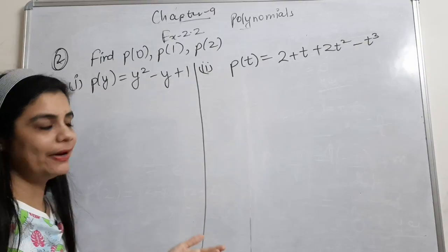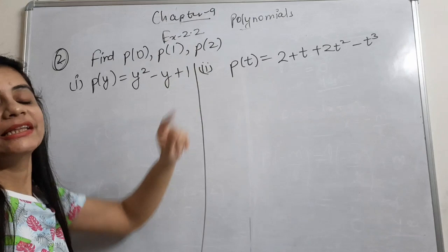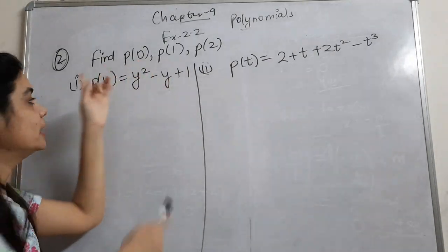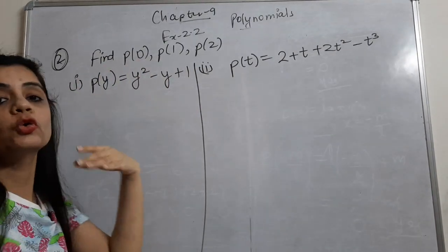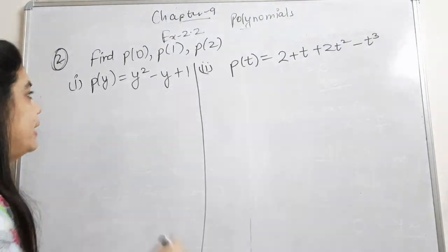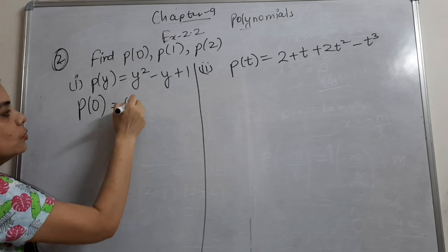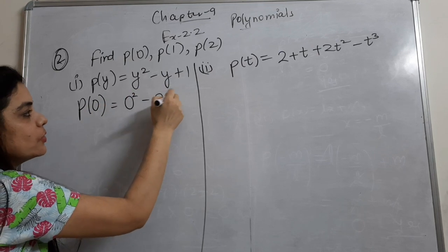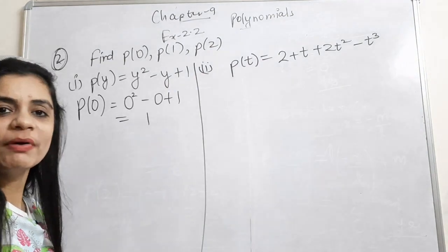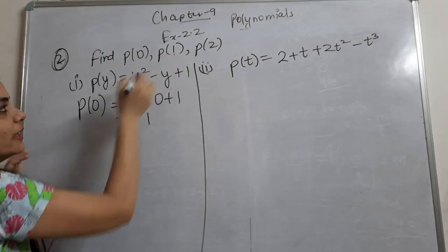First part: find p(0), p(1), p(2). That means p(0) means wherever y is, I have to put 0. So p(0) is equal to 0² minus 0 plus 1, which will come to 1.